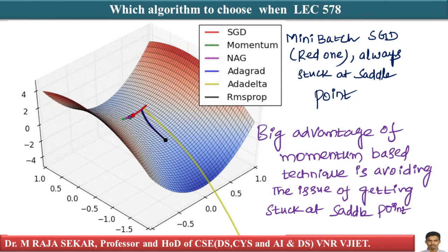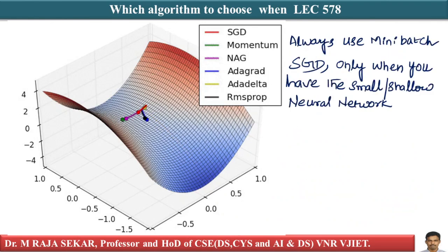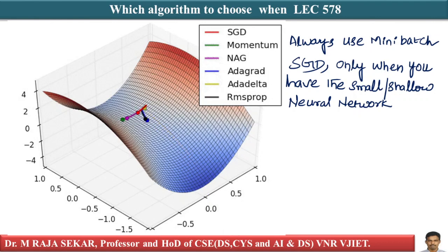You should always use mini-batch SGD only when you have a very small or shallow neural network, and if you notice that you may be encountering the problem of saddle points.